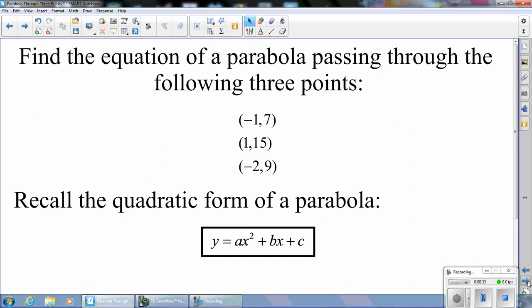We call the quadratic form of the equation of a parabola y equals ax squared plus bx plus c, and it's our job to find the values of a, b, and c such that that parabola will go through these three points.